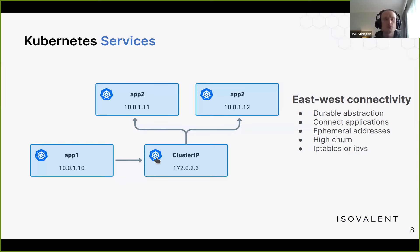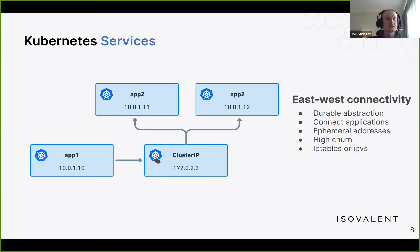The solution — not a new one — is virtual IP addressing. We define an IP address that represents the service hosted by an app, which makes it much simpler for the client app to connect. It doesn't need to know about the different instances running in the background. The networking layer then translates requests from the service IP to the back-end IPs to ensure delivery.